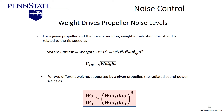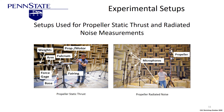How does weight drive propeller noise levels? For a given propeller in hover, weight equals static thrust, which is related to tip speed as RPM squared times diameter squared. We also know that velocity affects radiated sound by velocity to the fifth or sixth power. Working through these relationships, tip velocity goes as the square root of weight, and radiated sound power goes as the cube of weight. We set up a case where we could measure thrust with a balance and weights, and measure sound with microphones to characterize directivity.